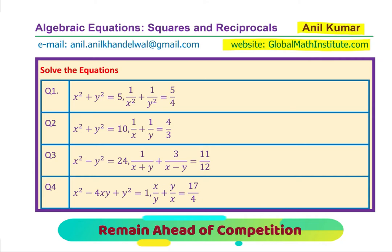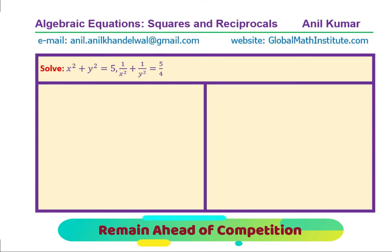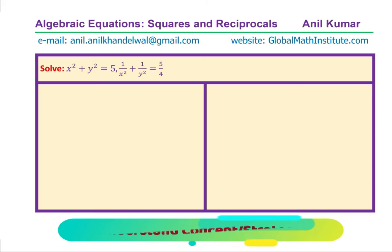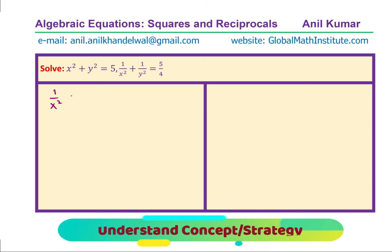Let us begin with the very first one, which is x² + y² = 5, and 1/x² + 1/y² = 5/4. Two conditions are given to us. Taking the common denominator x²y² in the second equation, we get (y² + x²) / x²y² = 5/4.